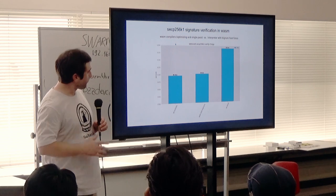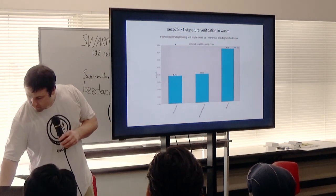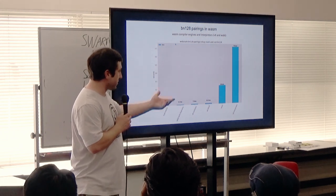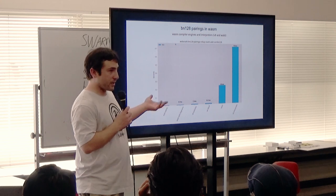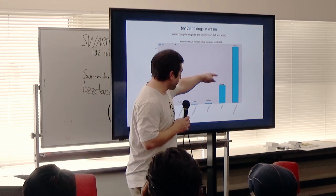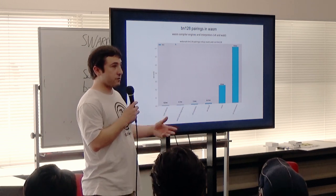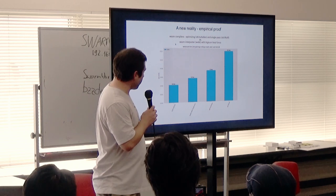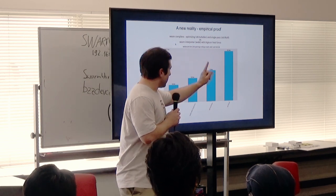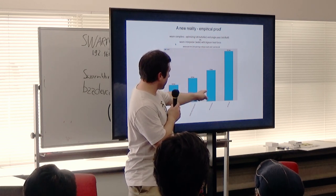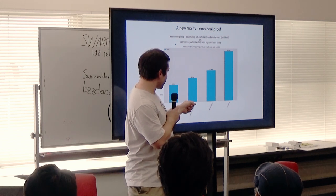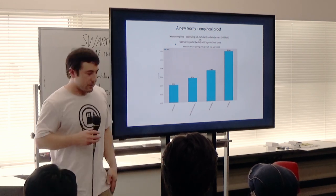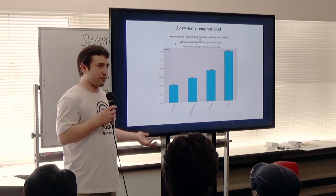That interpreter with bignum host functions at 100 milliseconds is basically the same speed as an optimizing WASM compiler would be. We already knew we could do scalar point multiplication fast. Now the question was pairings — and it turns out yes. These results are very fresh. Without bignum host functions: 230 milliseconds in a regular interpreter. With them: single-pass compiler 12ms, optimizing compiler 7.5ms, interpreter with bignum host functions 5ms, native Rust 4.2ms. An interpreter doing pairings at pretty close to native speed.